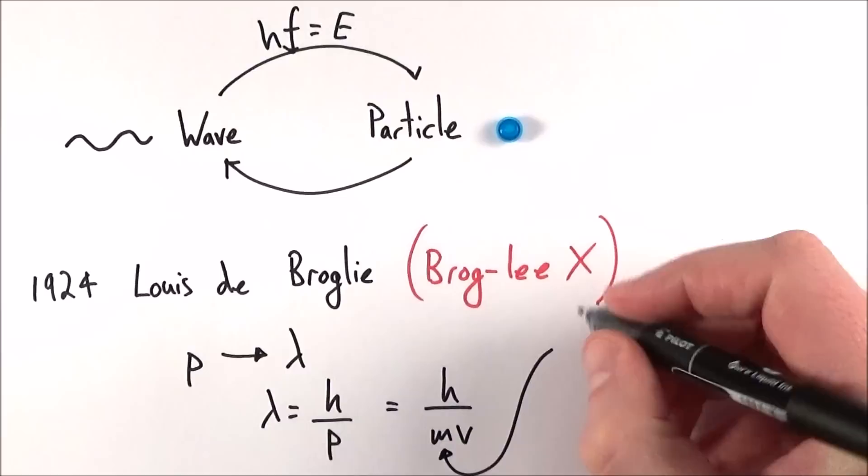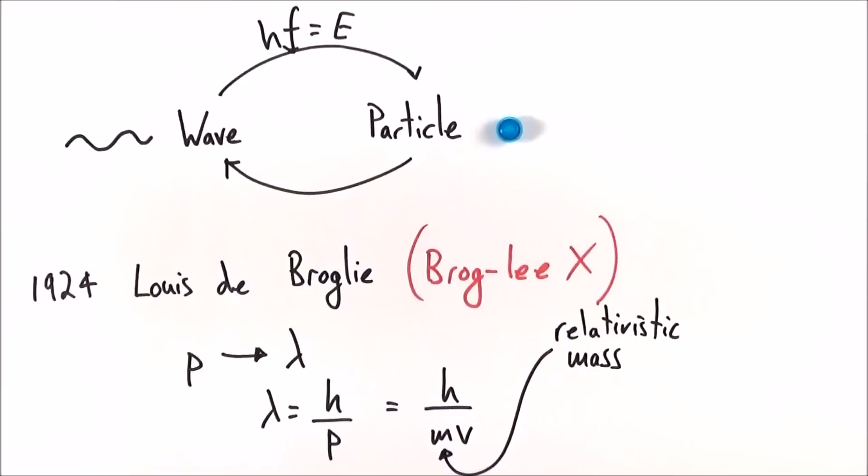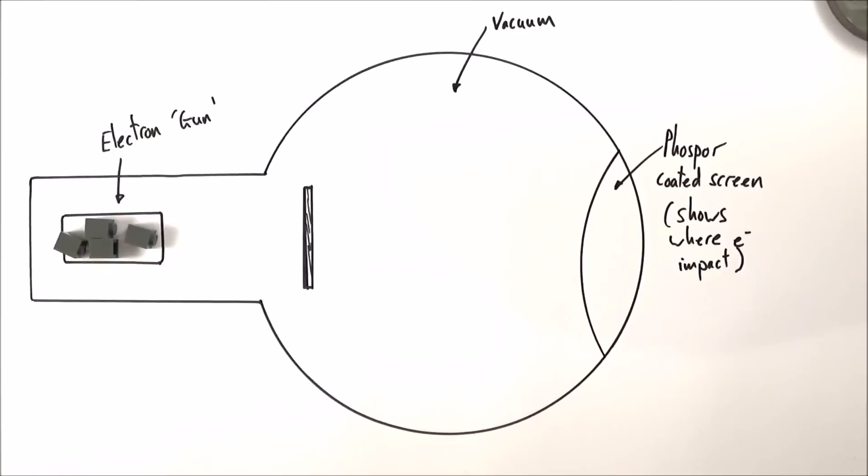Now the important thing here is that this m is the relativistic mass of the particle. This means as a particle gets closer to the speed of light, the mass tends to increase due to relativistic effects. And it was in 1927 when this effect was actually shown in the lab, and what they had was a stream of electrons which were emitted by this electron gun.